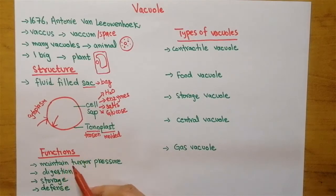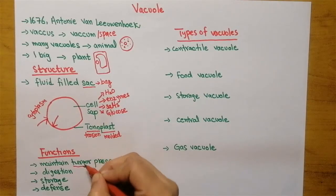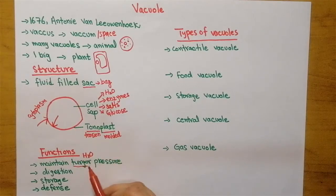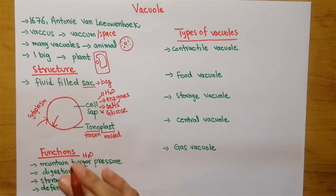If we talk about the function of vacuole, the main function is to maintain the turgor pressure. Turgor means water pressure. Just like water pushing on the walls of a balloon, similarly the vacuole maintains turgor pressure, which prevents the cell from bursting.